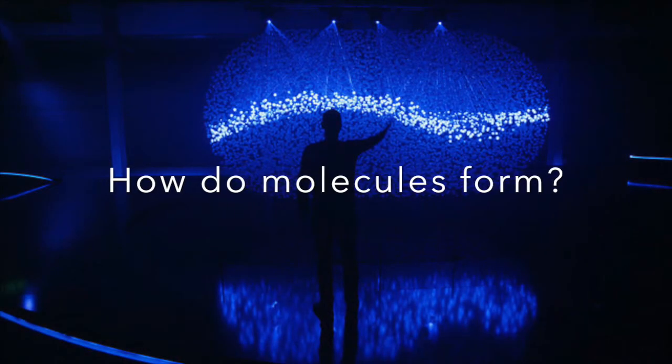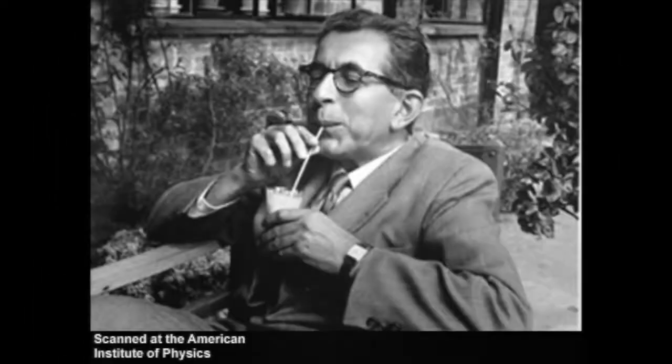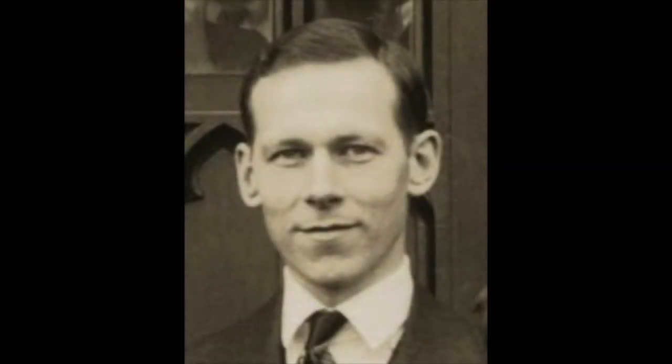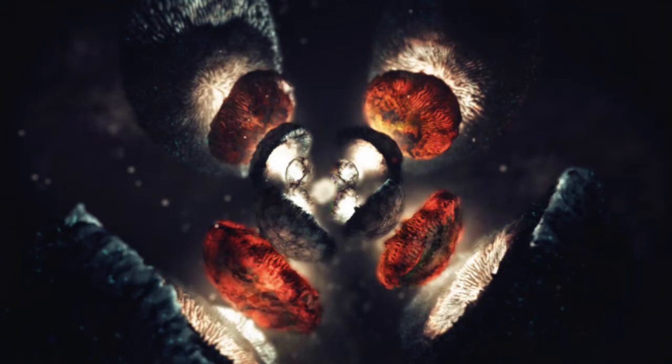How do molecules form? In the 1920s, physicists Walter Heitler and Fritz London showed how to describe a chemical bond using the equations of quantum theory. American chemist Linus Pauling proposed that bonds form when the electron orbitals of different atoms overlap in space. A competing theory by Robert Mulliken and Frederick Hund suggested that bonds are the result of atomic orbitals merging into molecular orbitals that extend over more than one atom.